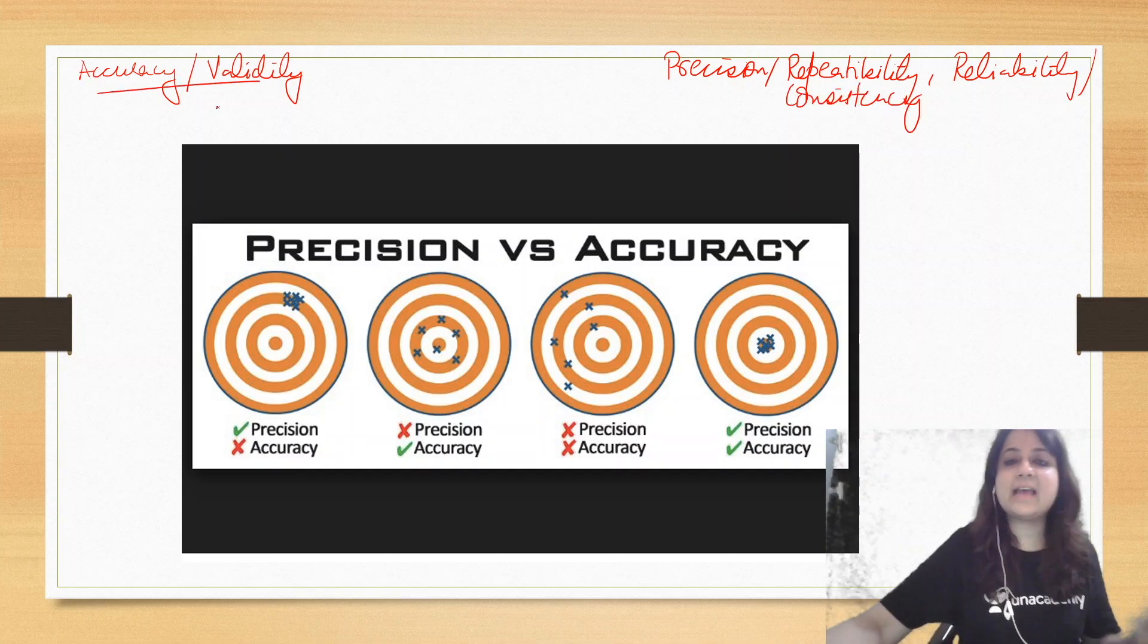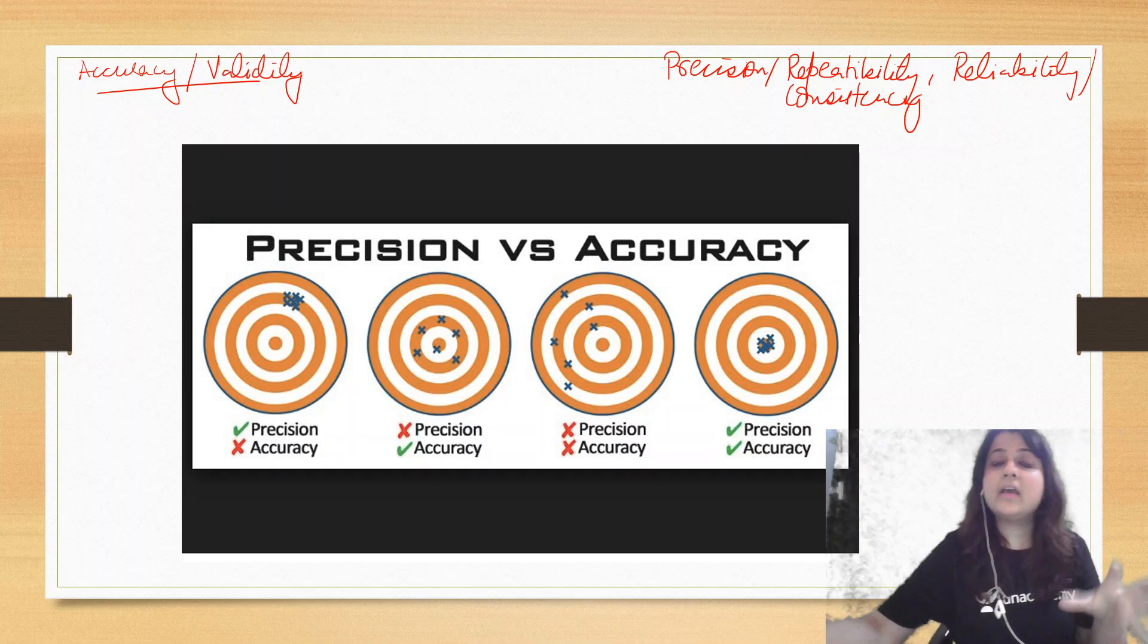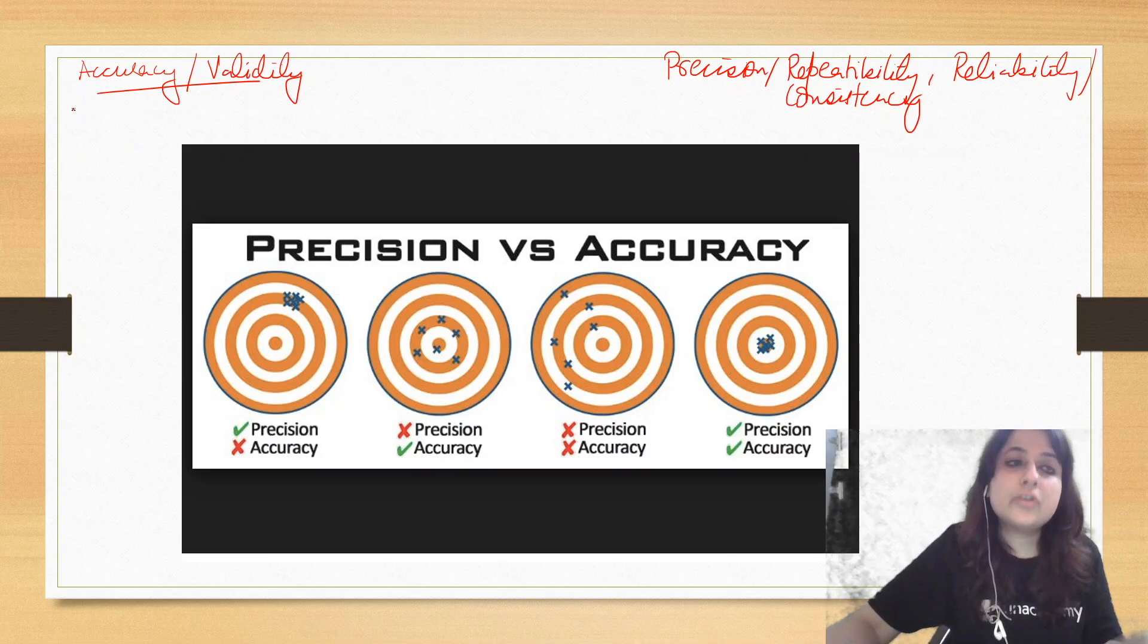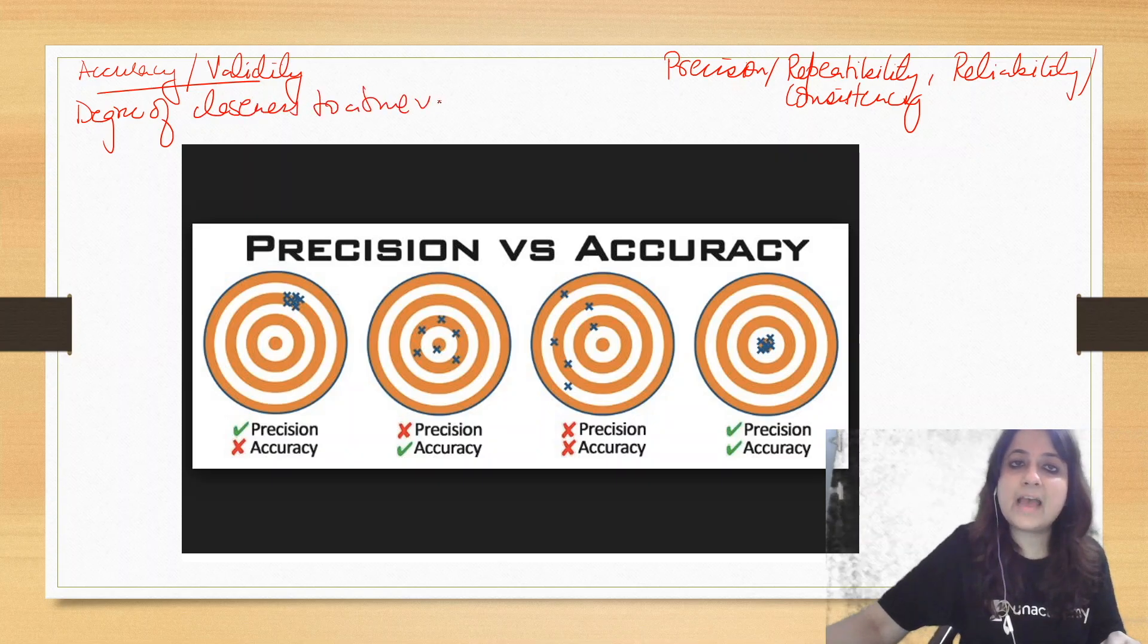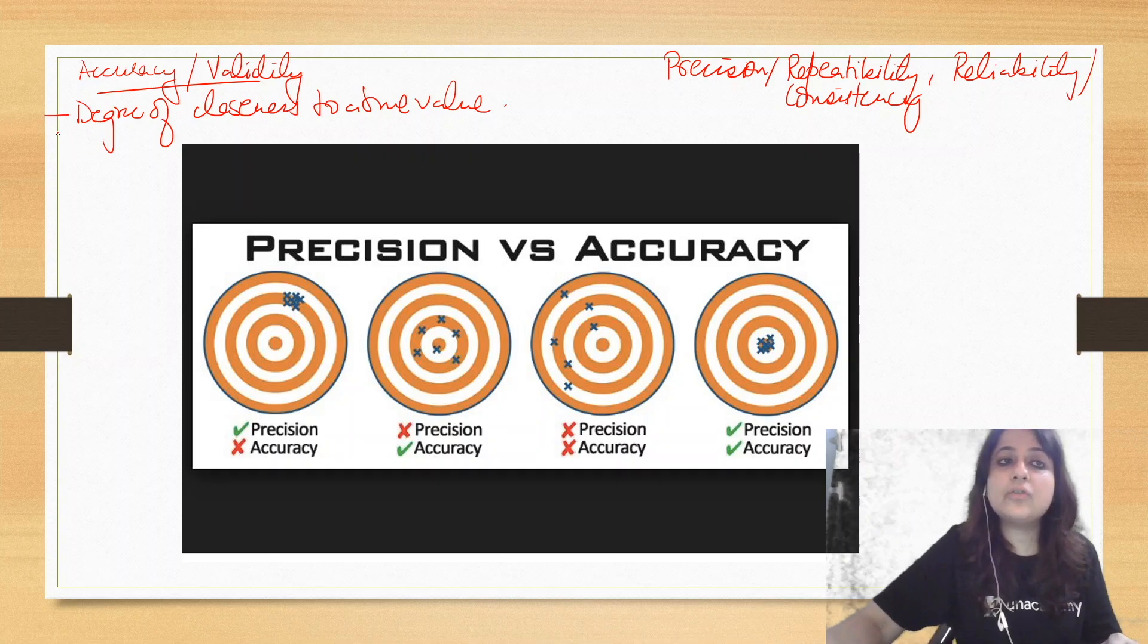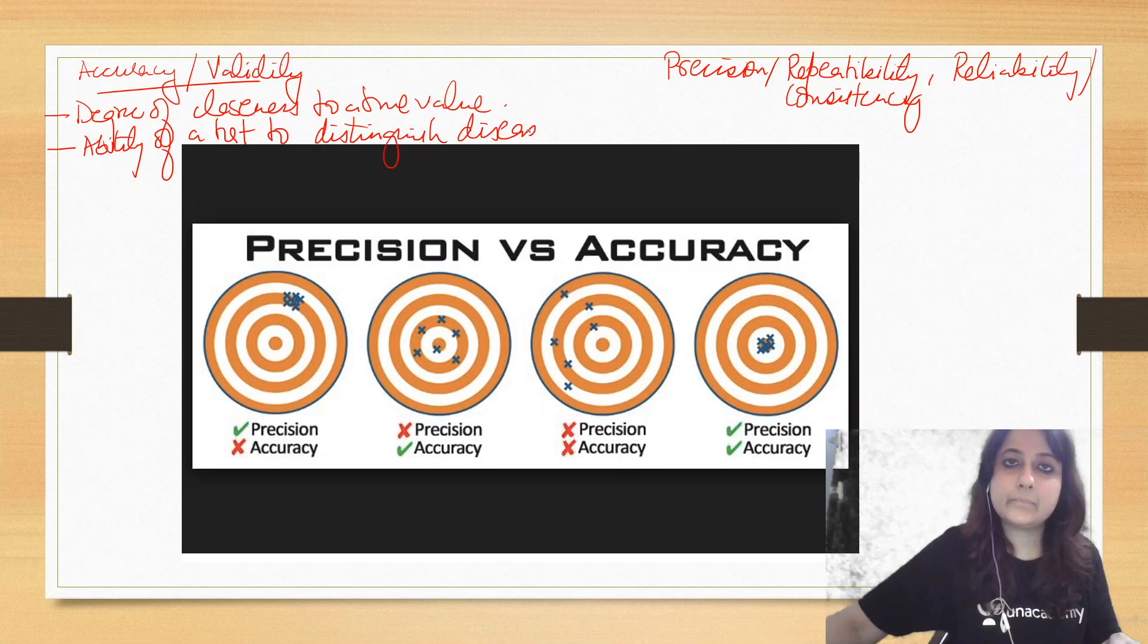Now what is accuracy or validity? Accuracy or validity of a test means that it is the degree how close a test is to its true value. That means does the test measure what it is supposed to measure. So you can say that it is the degree of closeness to a true value. Or in other words, accuracy is also the ability of a test to distinguish diseased from non-diseased.